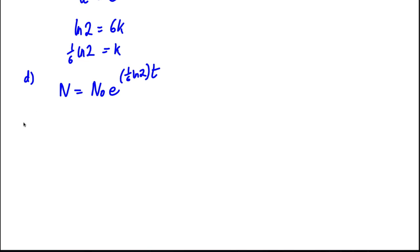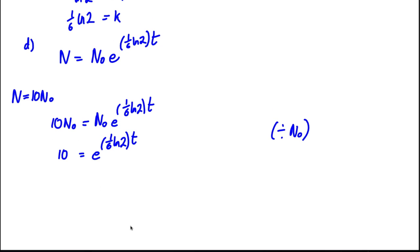Now, for things to have increased by a factor of 10, we want N now to be equal to 10N₀, 10 times what initially was. So 10N₀ is equal to N₀e^(1/6 ln 2 × T). Divide both sides by N₀. So we would get 10 is equal to e^(1/6 ln 2 × T). And then we could take the ln of both sides. So ln 10 is equal to 1/6 ln 2 multiplied by T. And therefore, T is clearly ln 10 divided by 1/6 ln 2. So we work that on our calculator.